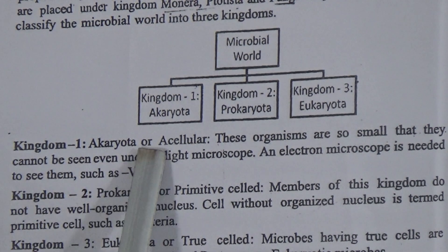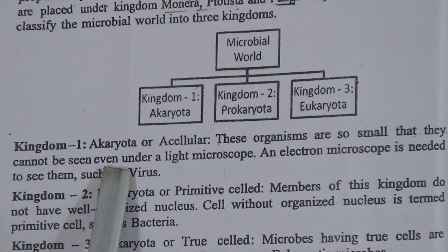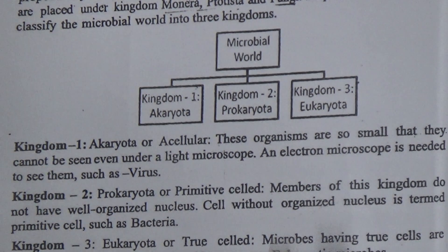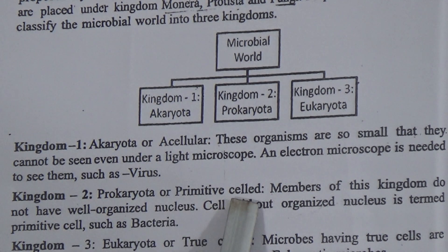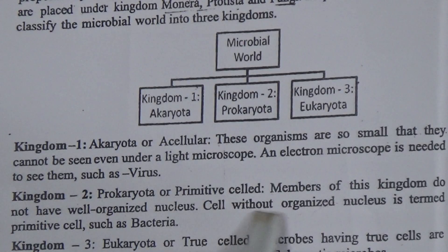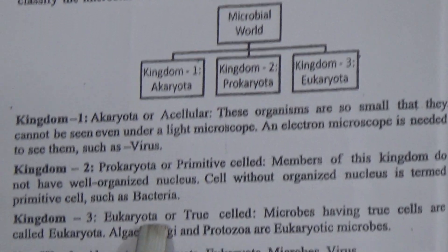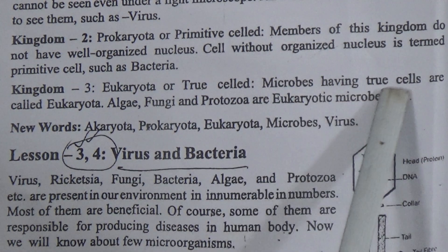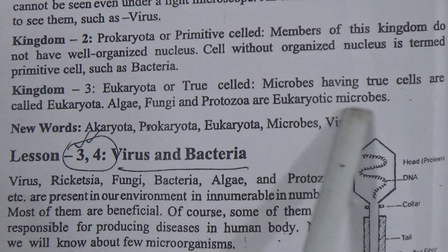Kingdom 1, Acaryotum: these organisms are so small that they cannot be seen even under a light microscope; an electron microscope is needed to see them, such as viruses. Kingdom 2, Prokaryotum or primitive cell: membranes of these kingdoms do not have an organized nucleus. Cells without an organized nucleus are termed prokaryotic, such as bacteria. Kingdom 3, Eukaryota or True Cells: microbes having true cells are called Eukaryota — algae, fungi, and protozoa are eukaryotic microbes.